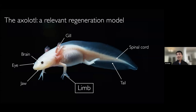A very relevant regenerative organism for this question is the axolotl, which is a salamander. It's a vertebrate like us, and despite having a very similar body plan to humans, it's highly regenerative. It can restore many tissues around the body, including the limb, which I'll talk about today, as well as many other tissues as indicated on the slide.